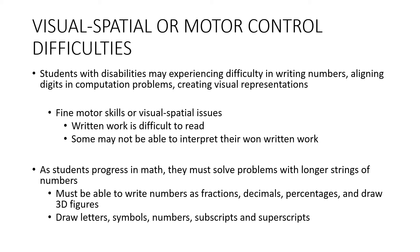Visual-spatial and motor control difficulties affect students with disabilities who may have trouble writing numbers, aligning digits in computational problems, and creating visual representations — think about long division, where you have to keep everything in the correct column. Fine motor skill challenges make written work difficult to read, and some students may not even be able to interpret their own written work. As students progress in math they must write fractions, decimals, percentages, draw 3D figures, and use letters, symbols, subscripts, and superscripts.